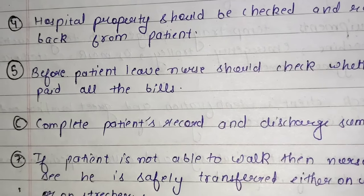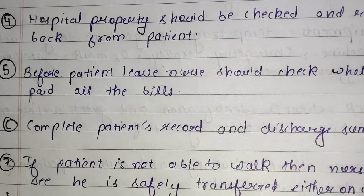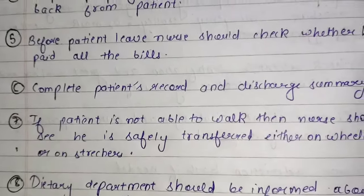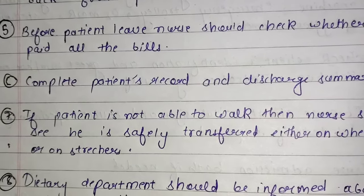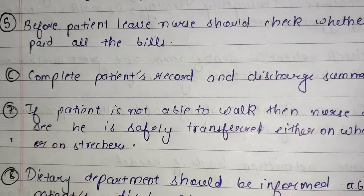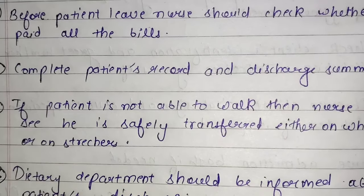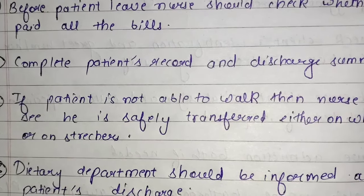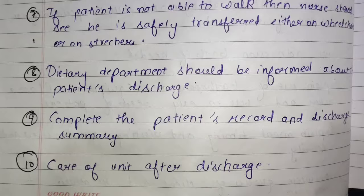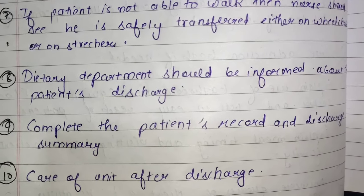Sixth point is complete patient's record and discharge summary — discharge ke time par nurse patient ki record file aur discharge summary ko complete karegi. Seventh point is if patient is not able to walk, then nurse should see he is safely transferred either on wheelchair or on stretcher — agar patient move nahi kar sakta, to nurse make sure karegi ki usko wheelchair ya stretcher provide ho hospital ki taraf se. Dietary department should also be informed about patient's discharge.